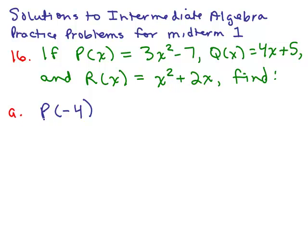So we have to look at the function for P(x) up here and it says 3x² - 7, so we're going to replace the x with a -4. Now be careful, you must put the -4 in parentheses since you're squaring it, and then remember what that means: -4 squared means -4 times -4 minus 7.